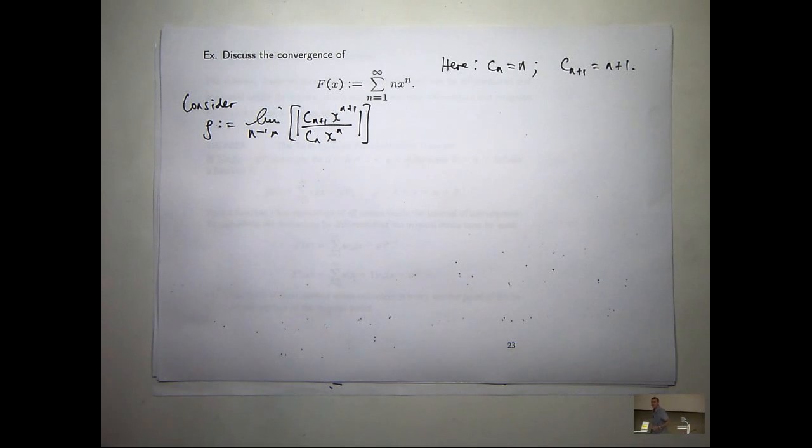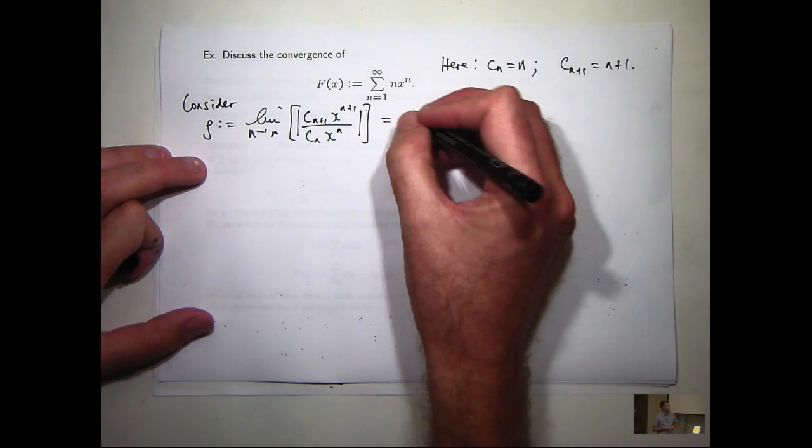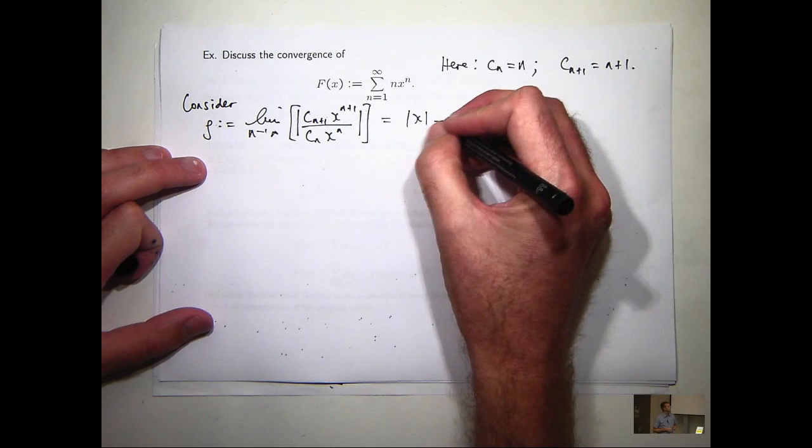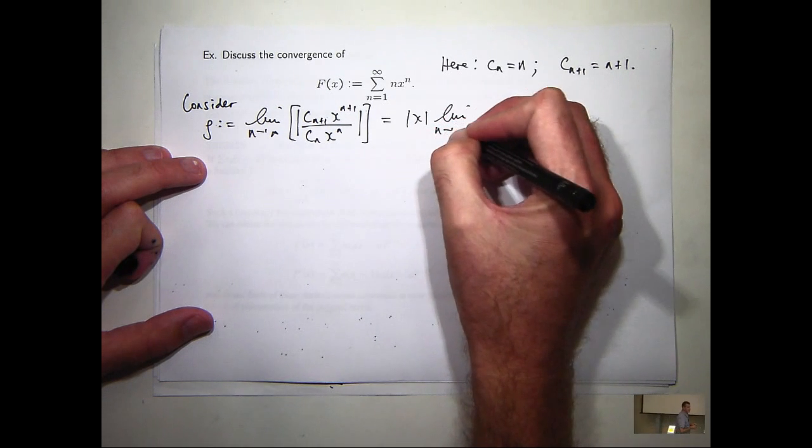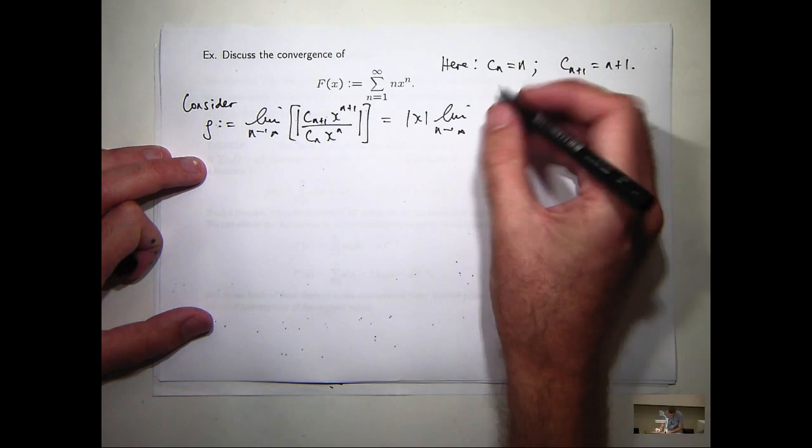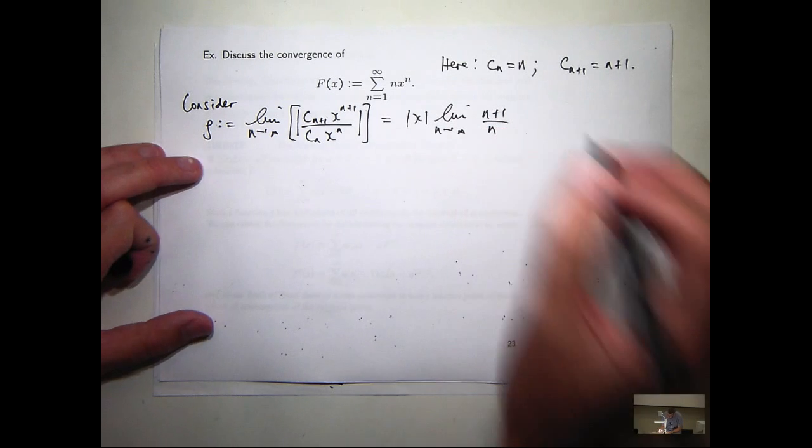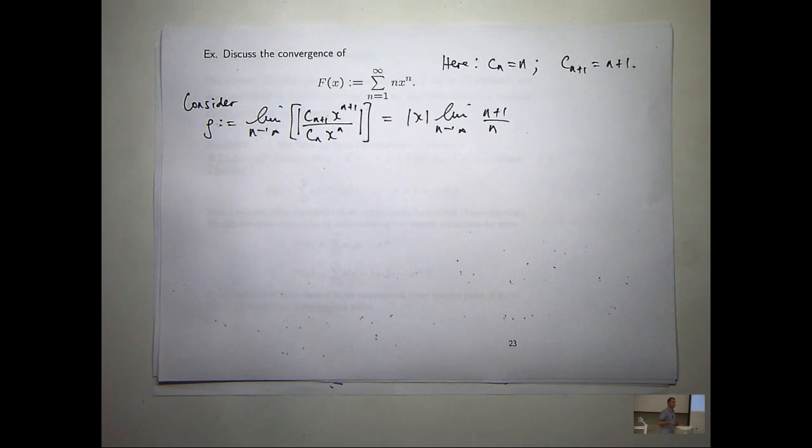Now you can see the powers are going to cancel pretty nicely. And I'm going to get n plus 1 all on n. Now I don't need the absolute values because the limit's going to positive infinity. So what's the limit going to be? n plus 1 on n, it's going to be 1.